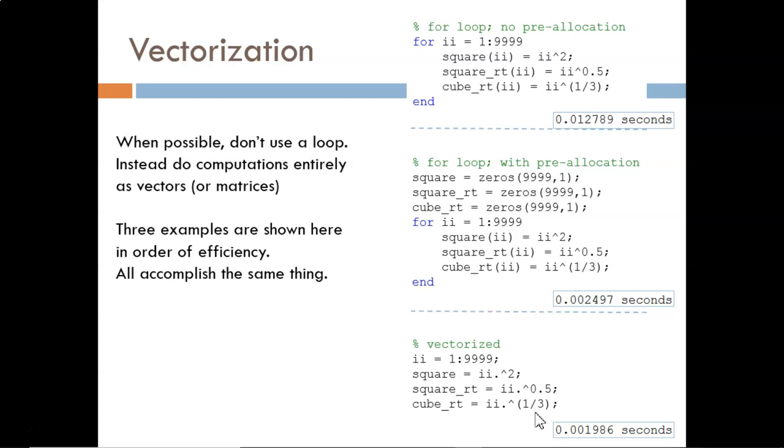Vectorization is the term that is normally used here for two reasons as I see it. First, this is normally done when dealing with vectors. For example, we make a lot more 2D plots than 3D plots. Secondly, it would sound funny if we tried to say matrixization or arrayization.